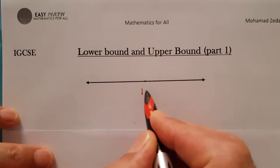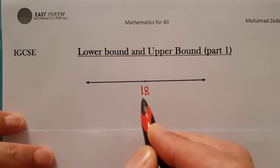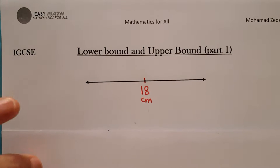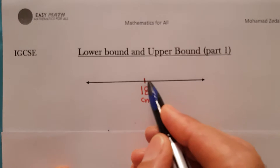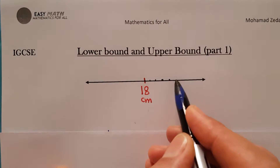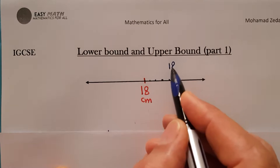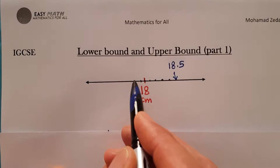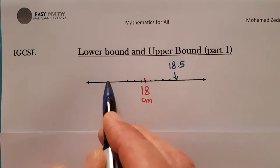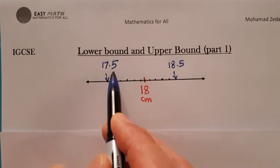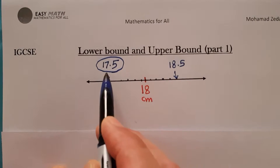Let me write 18 here on the number line. I ask you: what is the possible exact length? The possible length for the pencil — someone will say 18.1, maybe 18.2, 18.3, 18.4, or 18.5, or less than 18.5. Maybe the real length is less than 18, like 17.9, 17.8, 17.7, 17.6, or minimum 17.5.